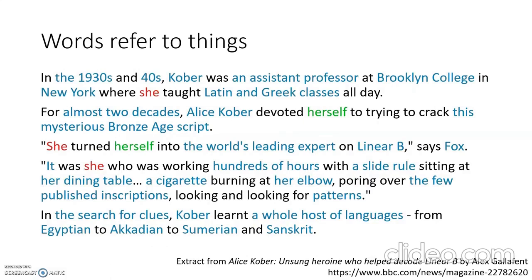The first thing to note is that words refer to things. We know that noun phrases refer to an entity in the world. This extract is from a BBC article about Alice Kober, the woman who played a radical role in decoding Linear B. In the 1930s and 40s, Kober was an assistant professor at Brooklyn College in New York, where she taught Latin and Greek classes all day. For almost two decades, Alice Kober devoted herself to trying to crack this mysterious Bronze Age script, and turned herself into the world's leading expert on Linear B. It was she who was working hundreds of hours with the slide rule sitting at her dining room table, a cigarette burning at her elbow, poring over the few published inscriptions, looking and looking for patterns.